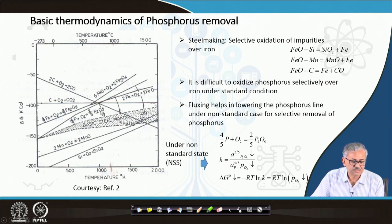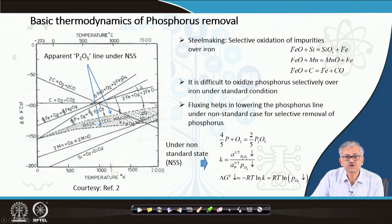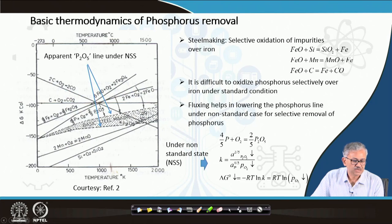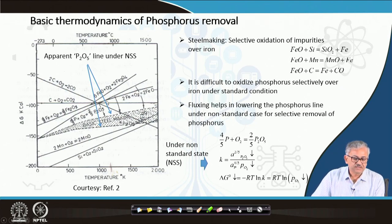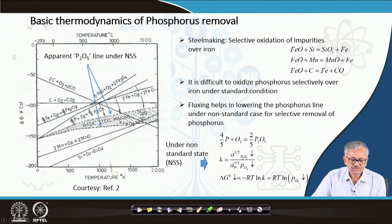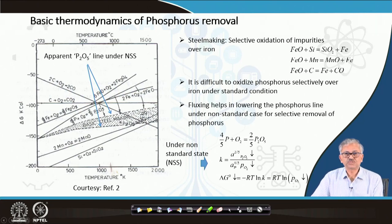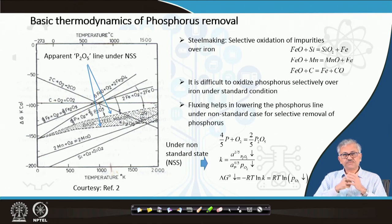These apparent P2O5 lines represent different slag basicities. With highly basic slag, the line comes down further; with less basic slag, the line is higher. But in both cases, the activity of P2O5 has decreased. As a result, the phosphorus line comes down below the FeO line, so P2O5 becomes more stable compared to FeO, and you are able to remove phosphorus in preference to iron — this is called selective removal of phosphorus.